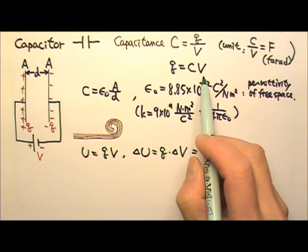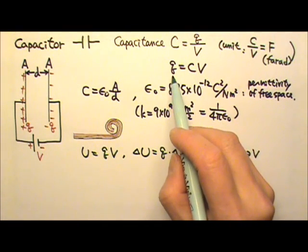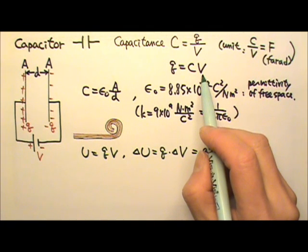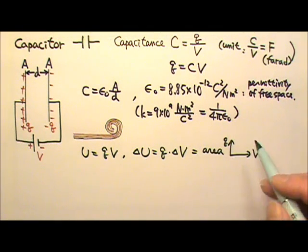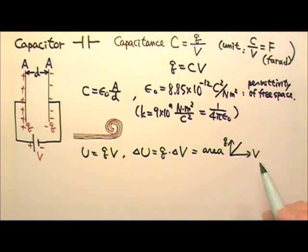For a capacitor, Q equals CV. For a certain capacitor, the C would be a constant. That means the charge Q is proportional to the voltage. Therefore, this graph would be a straight line linear equation like this.